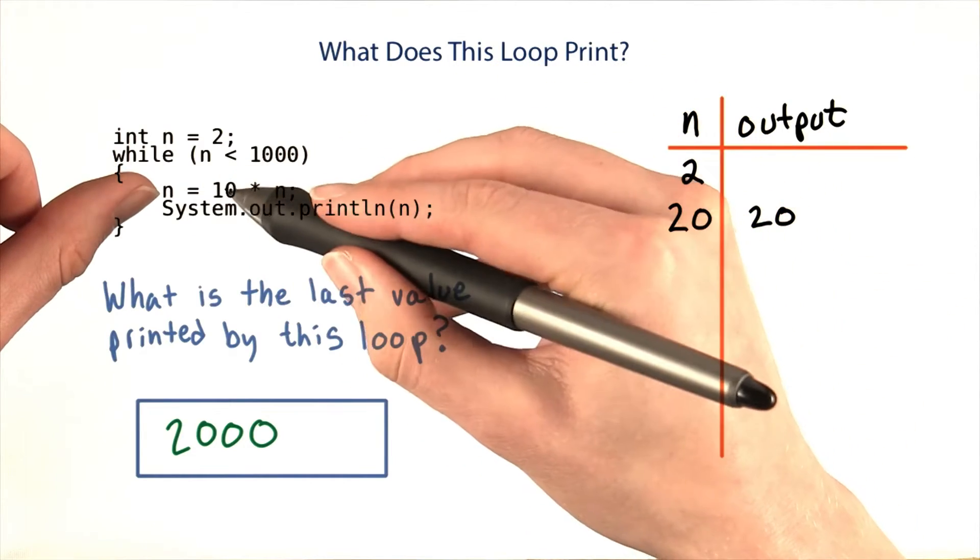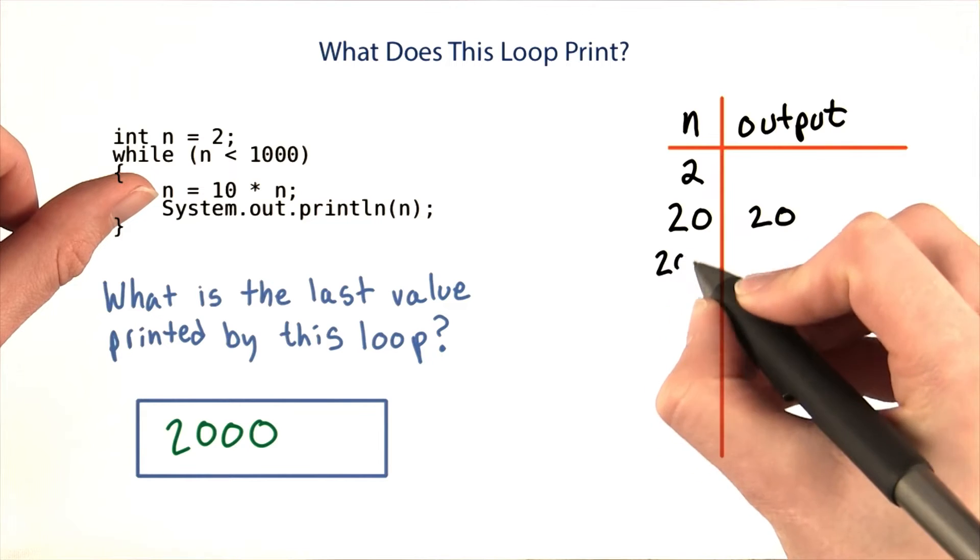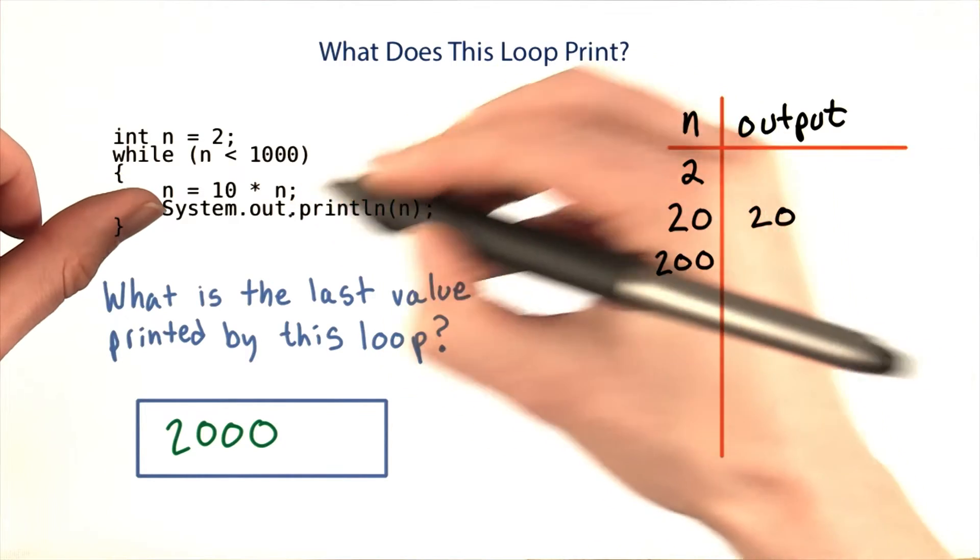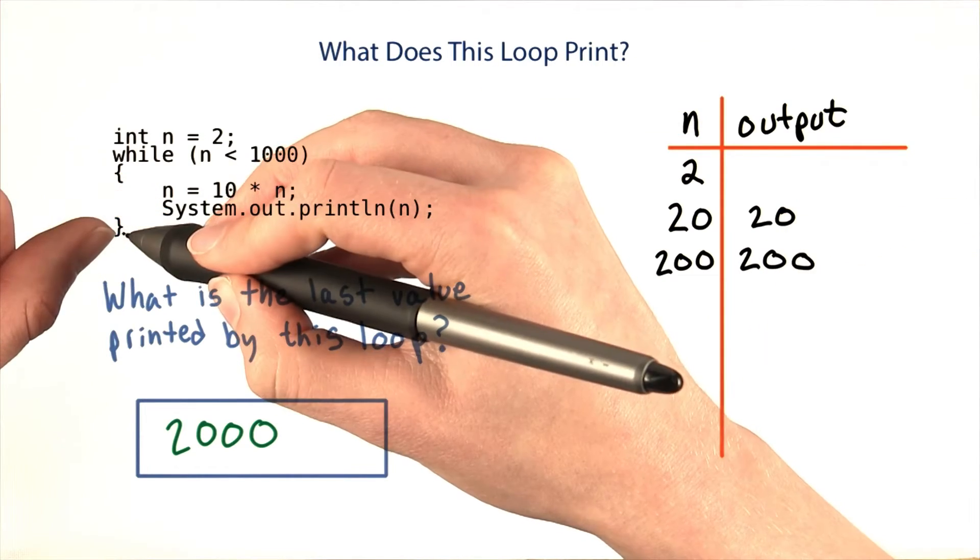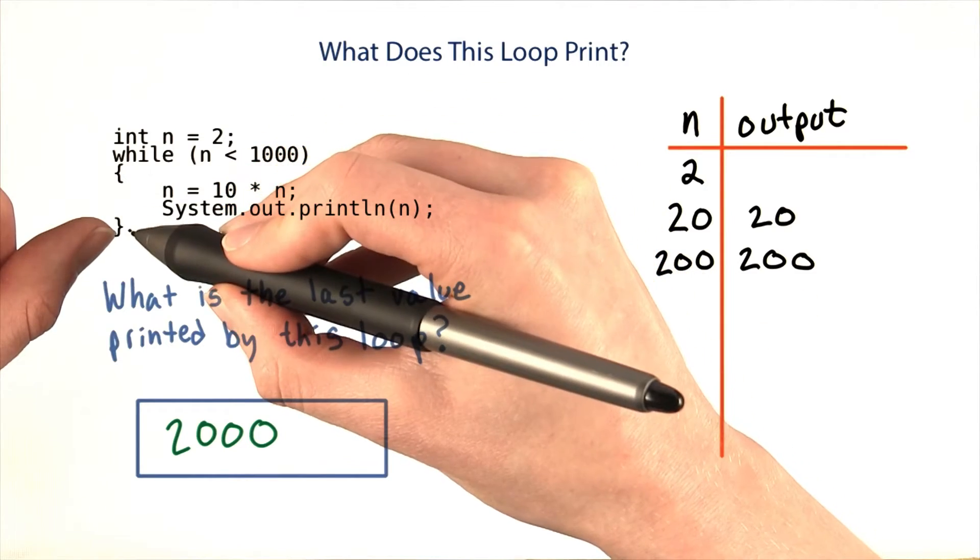I'll set n to 10 times 20, so I get 200, and then I print out 200. I get to the curly brace, so I go back up to the top of the loop again.